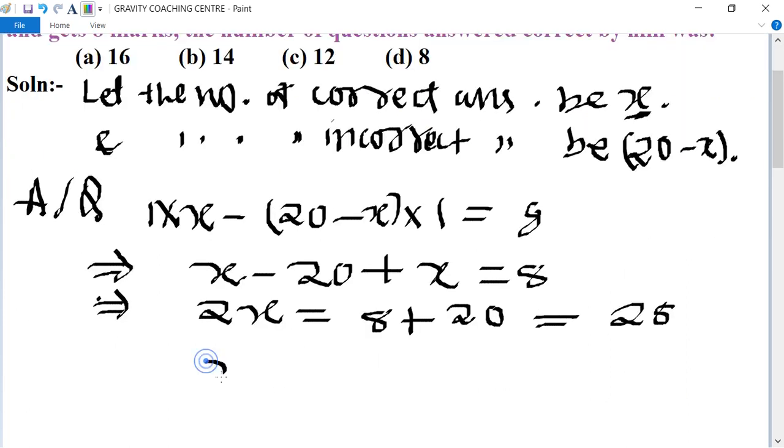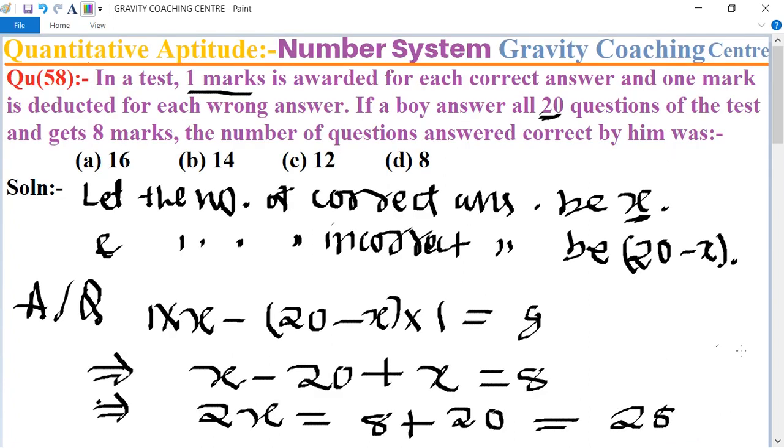Therefore, x equal to 28 upon 2. Cancel by 14 to 28. 14 is the required answer. So option b is the correct answer.